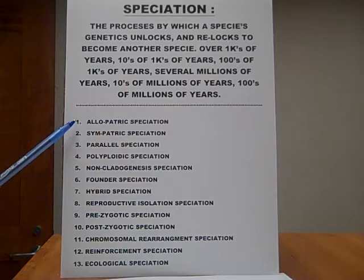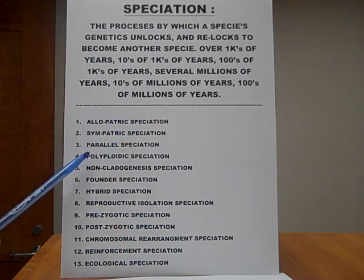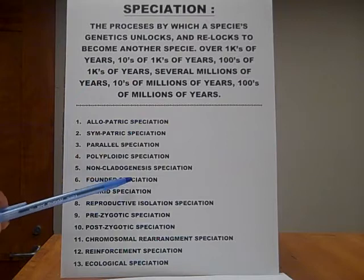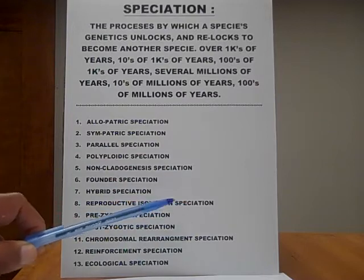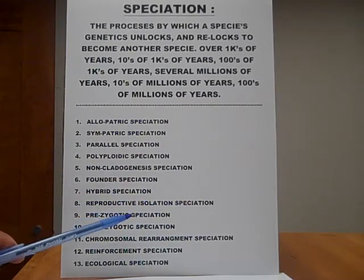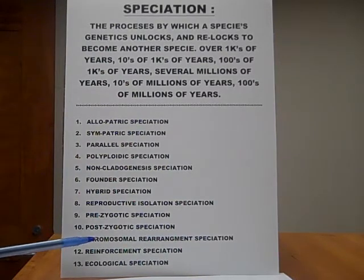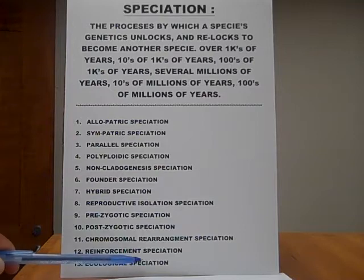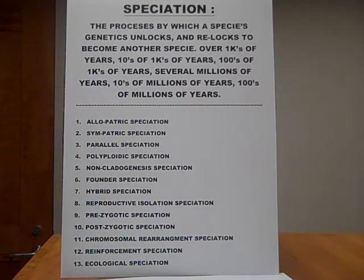Number one: allopatric speciation. Two: sympatric speciation. Three: parallel speciation. Four: polyploidic speciation. Five: non-cladogenesis speciation. Six: founder speciation. Seven: hybrid speciation. Eight: reproductive isolation speciation. Nine: prezygotic speciation. Ten: postzygotic speciation. Eleven: chromosomal rearrangement speciation. Twelve: reinforcement speciation. Thirteen: ecological speciation. And fourteen — not written here — number fourteen is sequential speciation.